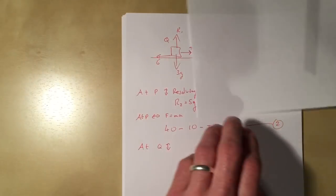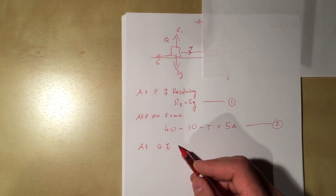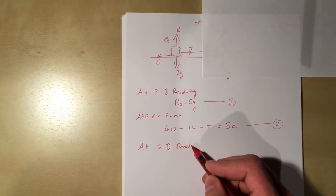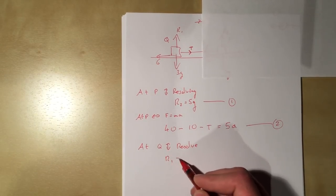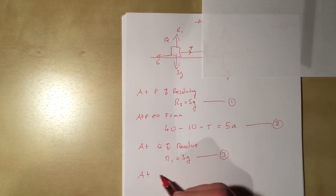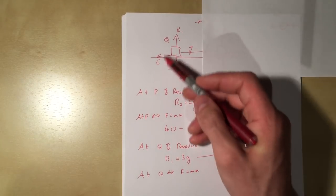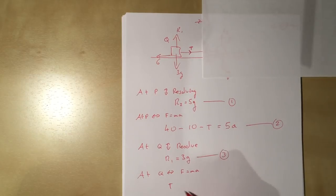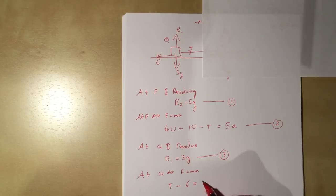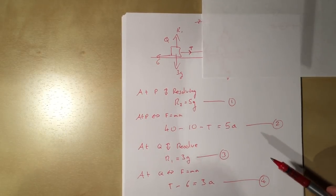Now cover up P and deal with Q. Vertically, resolving gives R1 equals 3g - equation three. At Q horizontally, applying F equals ma: T is pulling it forward, 6 is pushing it backwards, so T minus 6 equals 3a - that's equation four.